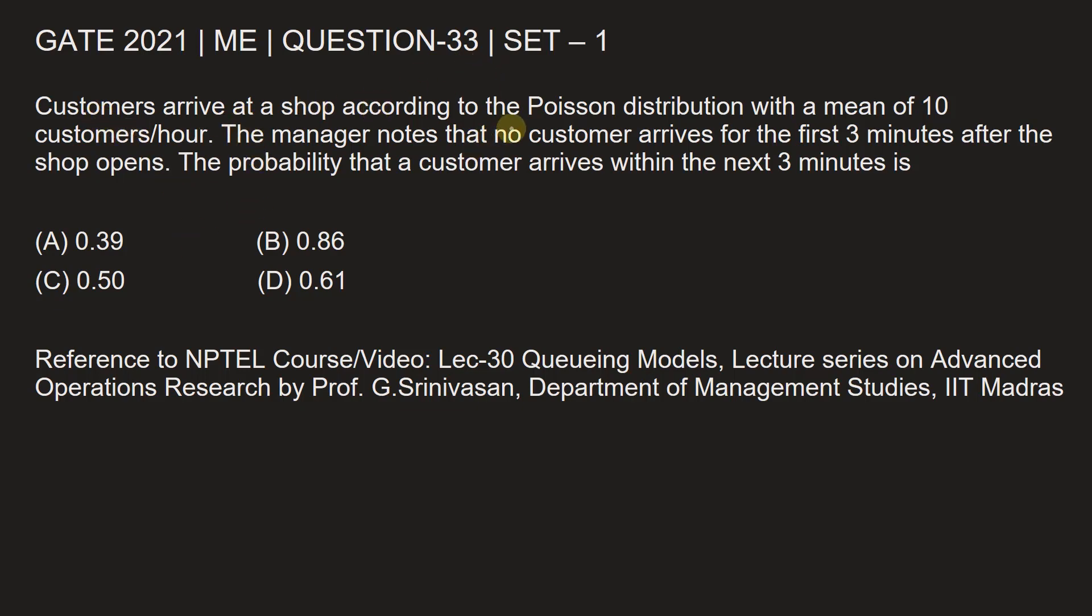Customers arrive at a shop according to the Poisson distribution with a mean of 10 customers per hour. The manager notes that no customer arrives for the first three minutes after the shop opens. The probability that a customer arrives within the next three minutes is... the rate of customers coming in per hour is given to be 10 and it is said that in first three minutes there are no customers arriving. We have to find out the probability that one customer will arrive within the next three minutes.